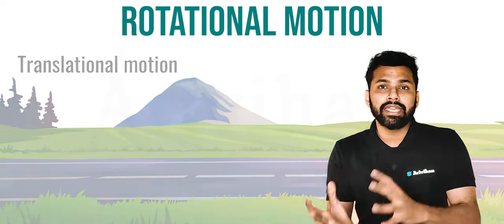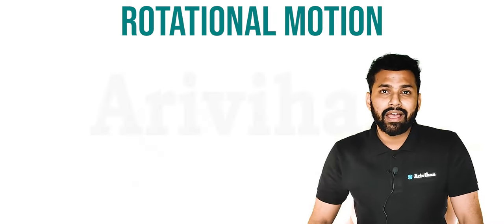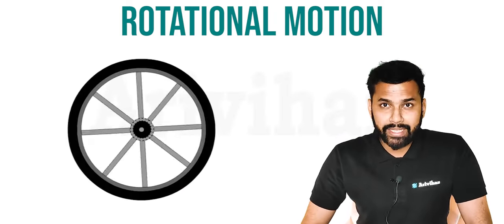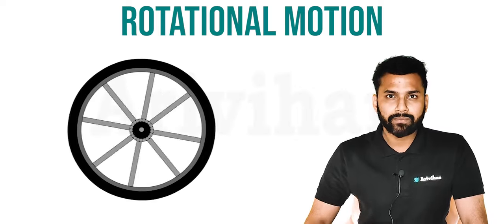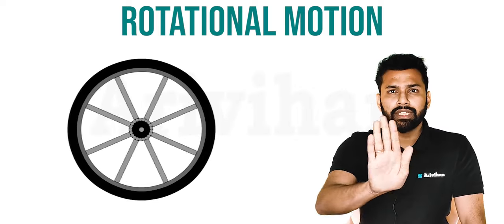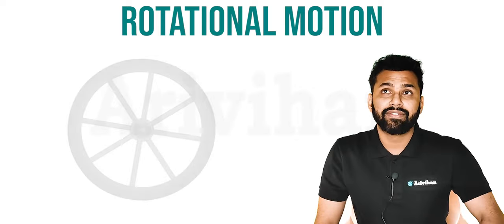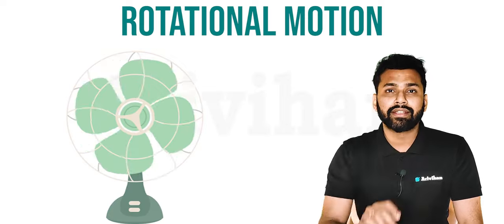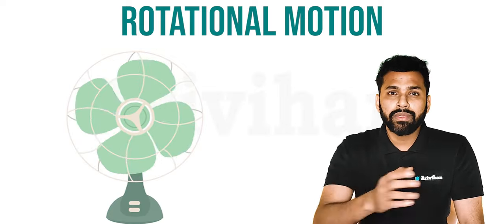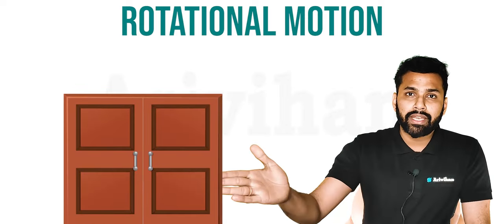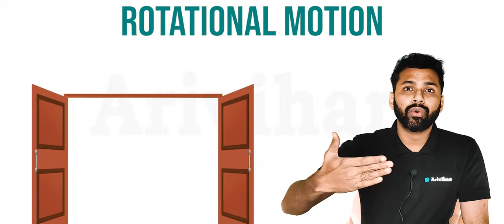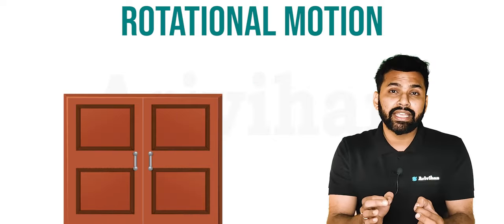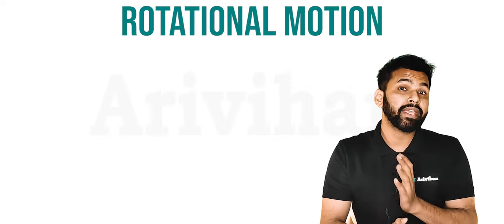But now the object will rotate. If there is any object — for example, if there is a fan, it will rotate. If there is a gate, it will rotate. So these kinds of objects undergo rotational motion.